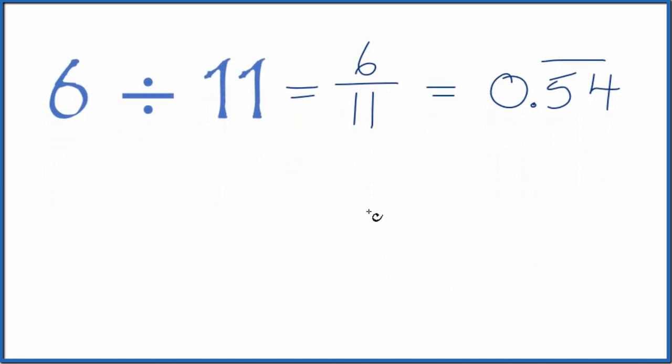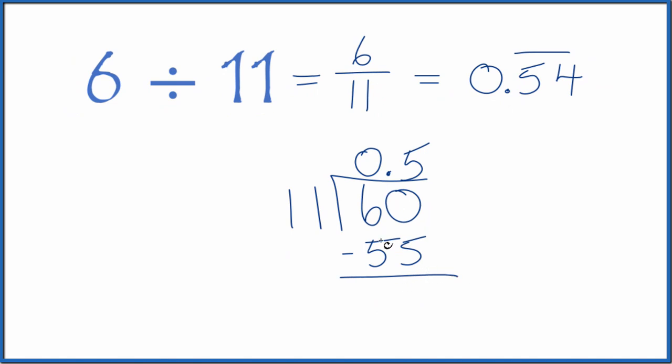We could also do the division longhand. So we could look at 6 and see how many times 11 goes into 6. 11 doesn't go into 6, so if we call this 60 and put a zero with a decimal point up here, now 11 will go into 6 five times. 5 times 11 is 55. We subtract and have 5 left over.